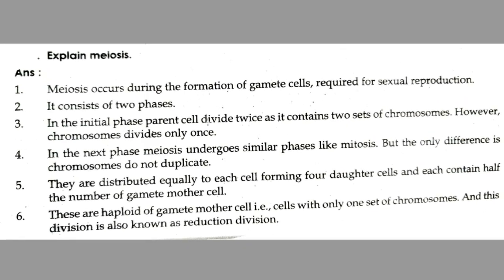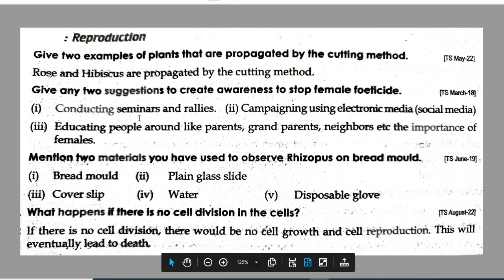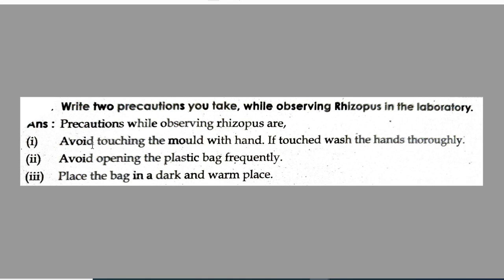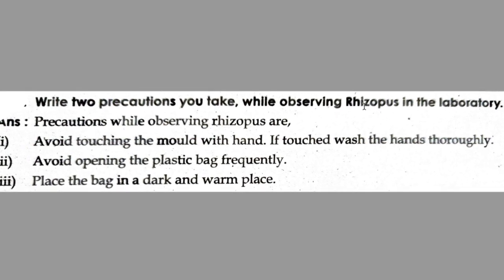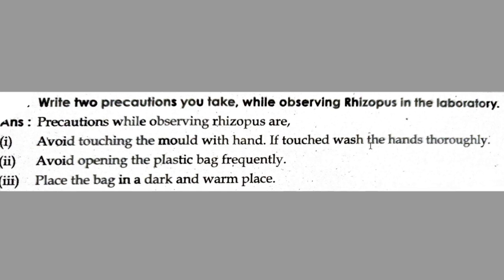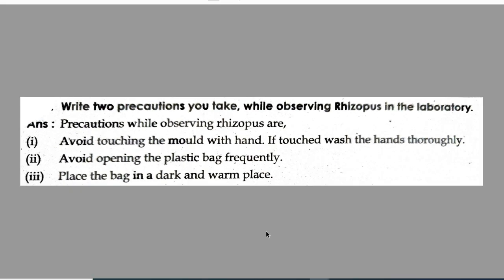Explain meiosis — mitosis and meiosis are important short answers. Give two examples of plants propagated by the cutting method. Give any two suggestions to create awareness to stop female foeticide. Mention two materials used to observe rhizopus and bread mold. Write two precautions while observing rhizopus in the laboratory: avoid touching the mold with hands, and if touched, wash hands thoroughly; avoid opening the plastic bag frequently; place the bag in a dark and warm place. Biology and other chapters' important questions are in the description. Please have a glance and prepare well for the exams. Thank you.